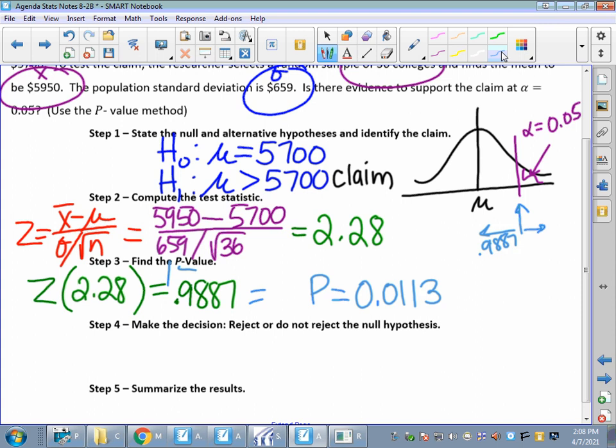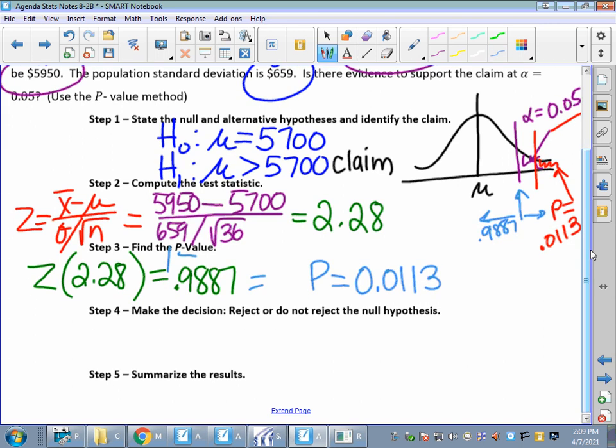Now, Step 4, I've got to make a decision. My p value is 0.0113. Well, if I'm going to just shade in 0.0113 at the end of that curve, to the right of that curve, that would probably be about right here. p equals 0.0113. That p value is smaller than my alpha. So, p is smaller than alpha. Or, the whole area of p fits inside that rejection zone. So, I am going to reject H sub O.